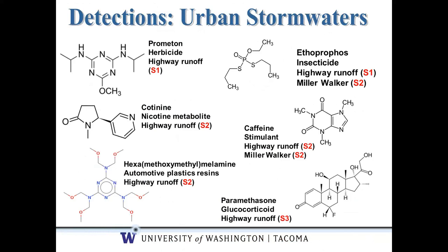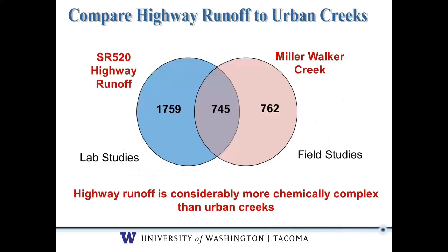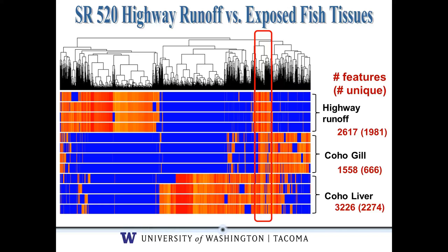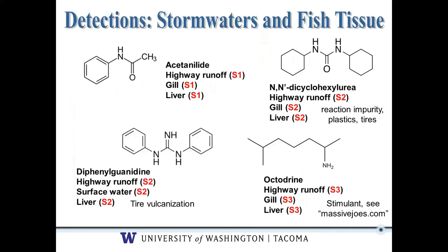As an example, in stormwaters we see pesticides like prometon and ethoprophos, things like caffeine and cotinine, resins from automobile plastics, and drugs that people use — all in highway runoff. When we compare highway runoff to urban creeks, highway runoff is about twice as complex as the water we see in urban creeks. On the slide here, samples of highway runoff show that inside the red box are chemicals common not only to the highway runoff but also inside coho salmon that died after exposure to that water. When we look at what chemicals those are, they're things like acetanalyde, dicyclohexylurea, and guanidine — compounds associated with tires.